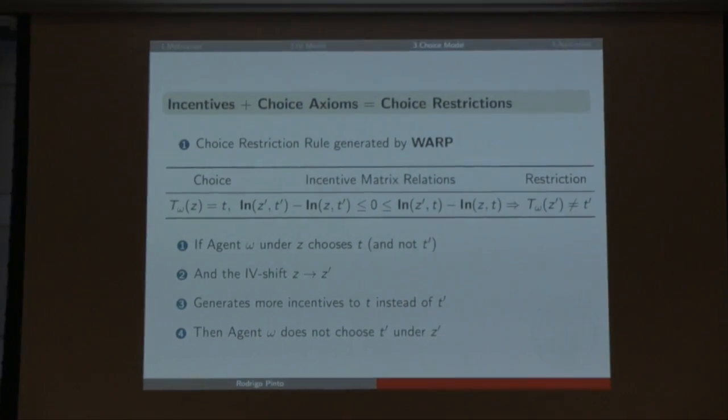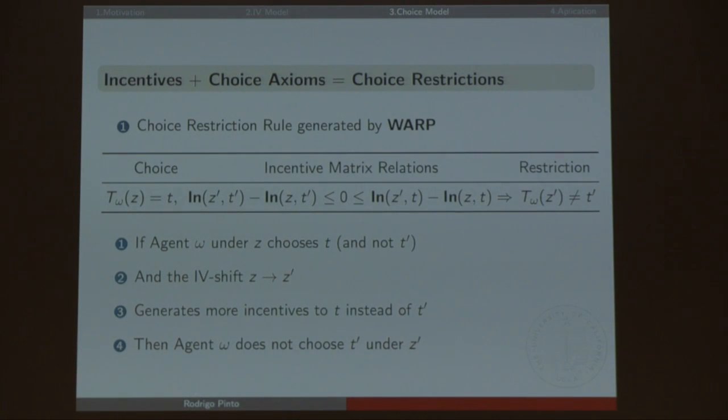Using this framework with WARP, I can generate a choice restriction rule. It says: if agent omega under Z chooses T, so he does not choose T', and the incentive gain for going from Z to Z' for T' is less than the incentive gain for T, then at Z' he also does not choose T'. It's quite intuitive.